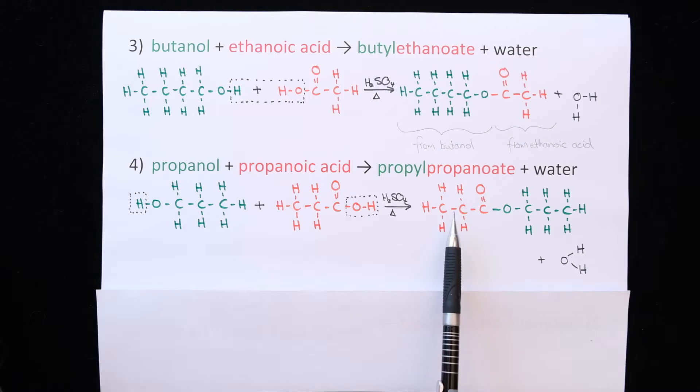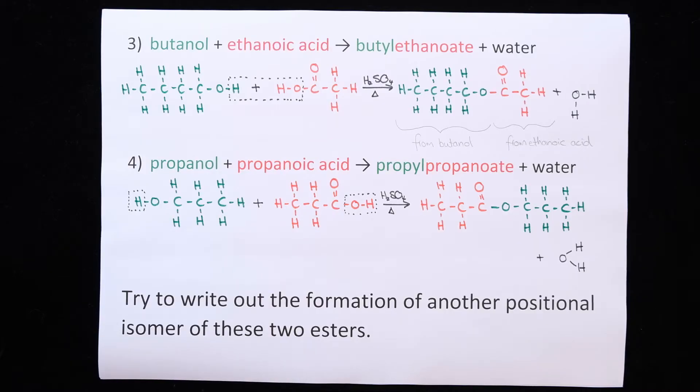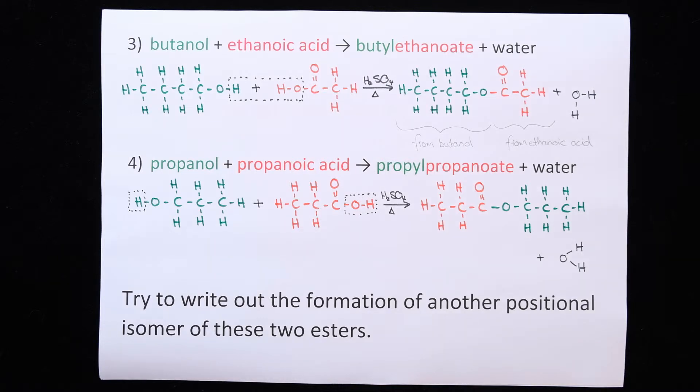So in this example I've written the ester the other way around to what we have been doing it. The carboxylic acid part is first, the alcohol part is second. So get used to seeing these structural formulas in other ways as well. These two esters are positional isomers as well. Try to write out the formation of another positional isomer of these two esters.